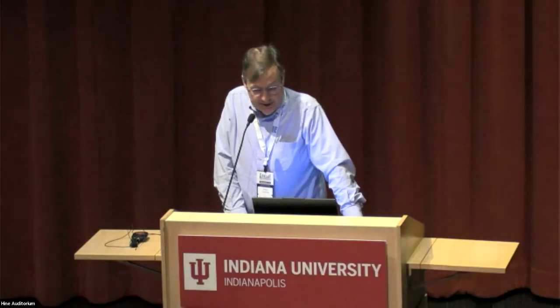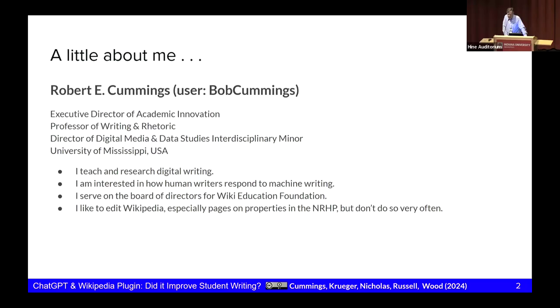A little bit about me. Bob Cummings is my username, and I work as Executive Director of Academic Innovation and Professor of Writing and Rhetoric. I'm also Director of Digital Media and Data Studies, an interdisciplinary minor at the University of Mississippi here in the U.S. I teach and research digital writing. I'm interested in how humans interact with machines when they do writing. I serve on the board for the Wiki Education Foundation, and I do like to edit Wikipedia, especially areas of the NHRP for the U.S., though I haven't done it in a while.